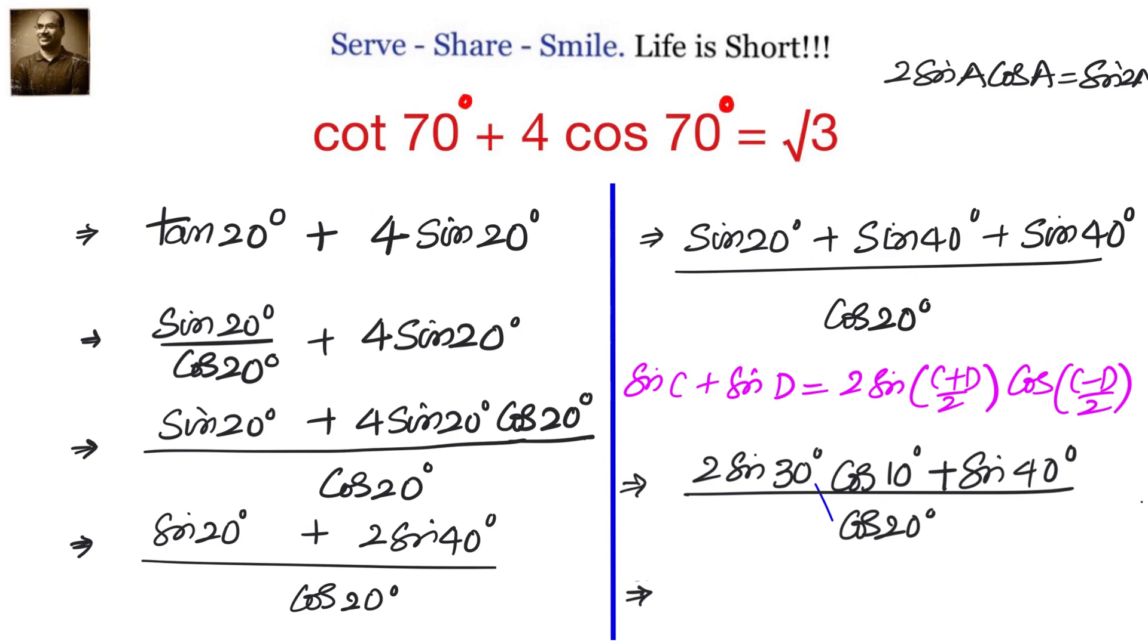So 2 into 1 by 2 is 1. Now we can write cos 10 as sin 80, so sin 80 plus sin 40 divided by cos 20.